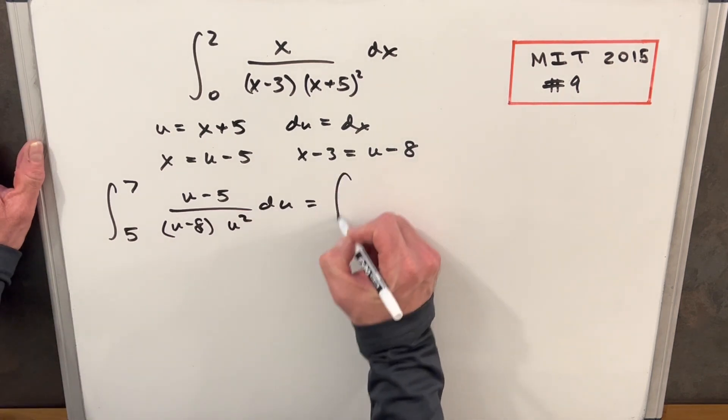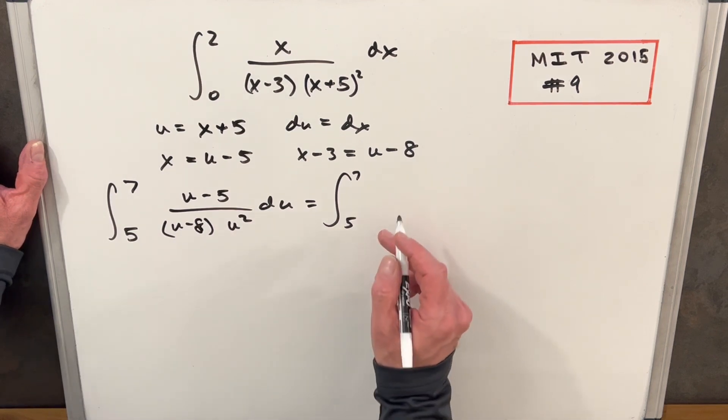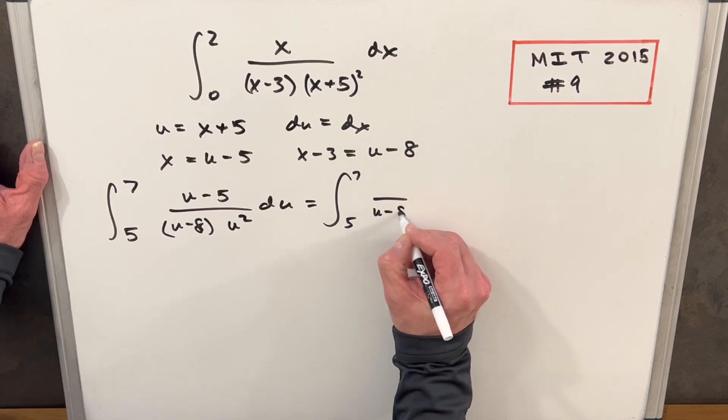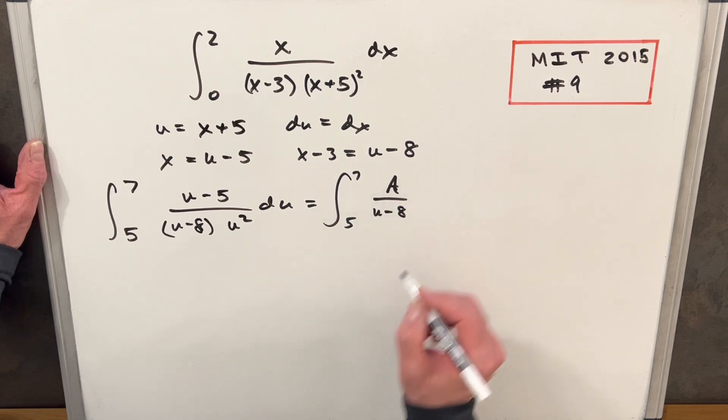And now for the partial fractions, we'll just break this up into, this is going to be three pieces, actually. So we're going to have, for our first, we're going to say, we'll have u minus eight, and then our, we'll just have an A here.